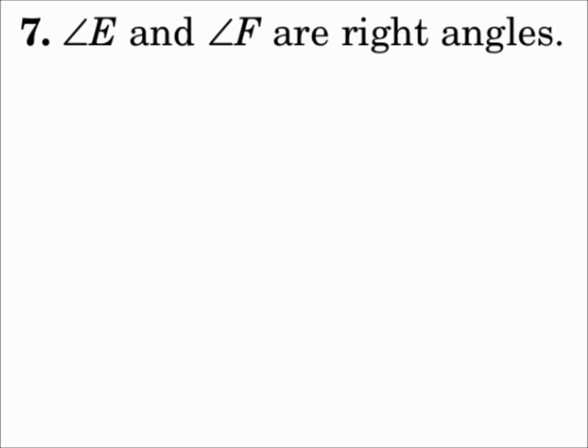Number 7: Angle E and angle F are right angles. Well, if they're right angles, then they both have a measure of 90. So I make the conjecture that angle E is congruent to angle F. You might also say that since they're both right angles, they add up to 180. So you could say that the measure of angle E plus the measure of angle F equals 180. You might also say that angle E and angle F are supplementary. Lots of different conjectures you can make.